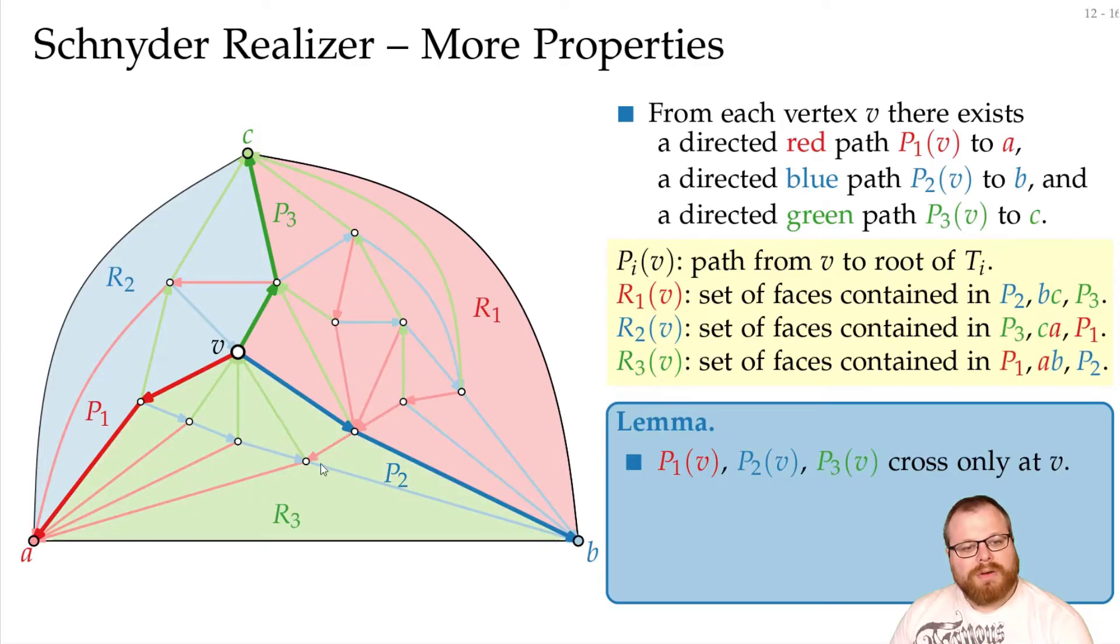Basically, we always have the region opposite to the side of the path of its color. We have the red path and then the red region. Blue path, blue region. Green path, green region.